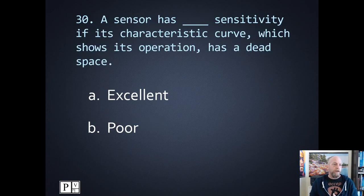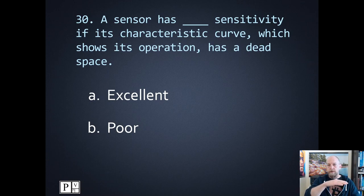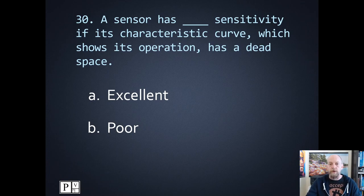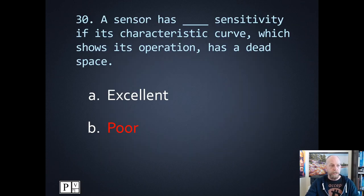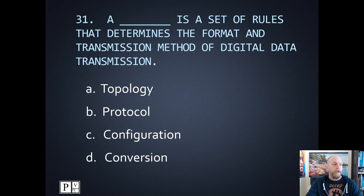Number thirty: a sensor has excellent or poor sensitivity if its characteristic curve has a dead space? A dead space is where the sensor craps out — everything's good in part of the range but then it goes off the rails and doesn't give you appropriate values. Same for a valve that gets stuck and has a dead band. It's obviously poor sensitivity if the characteristic curve has a dead space. If it's within the parameters of the sensor it's fine, if not you'll have to replace it.